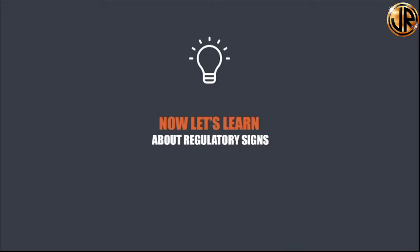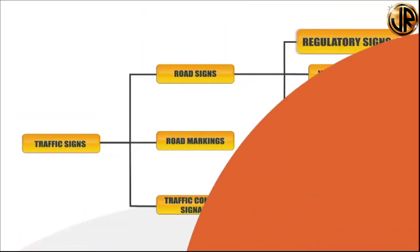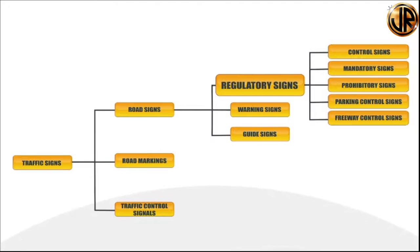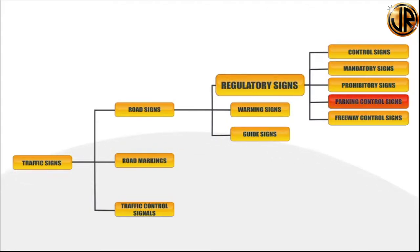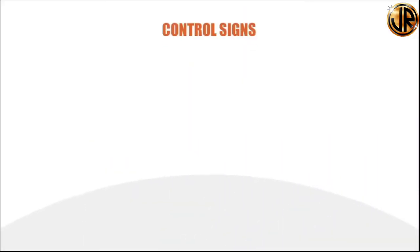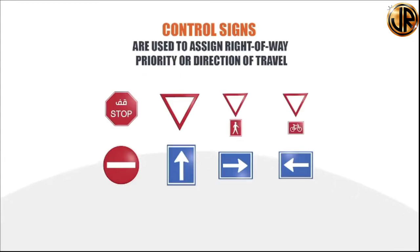Now let's learn about regulatory signs. These are the signs which control the actions of road users. These signs tell road users what they must or must not do. There are five types of regulatory signs: control sign, mandatory sign, prohibitory sign, parking control sign, and freeway control sign. Control signs are used to assign right-of-way priority or direction of travel.